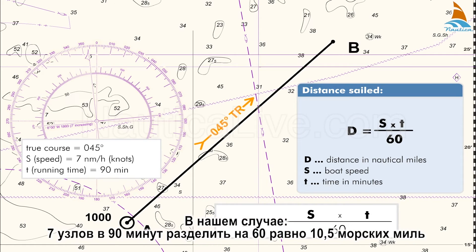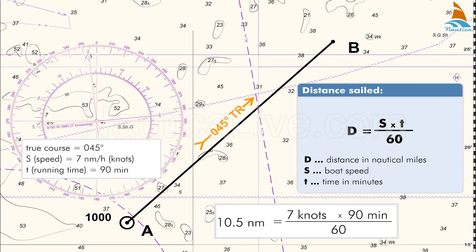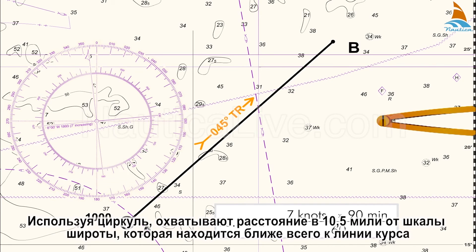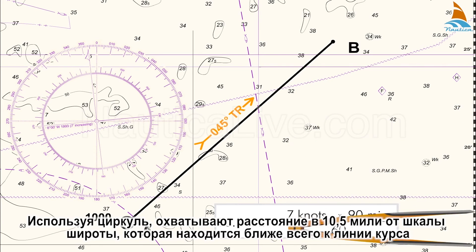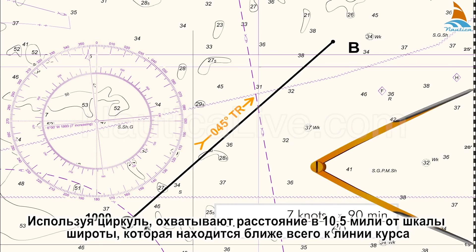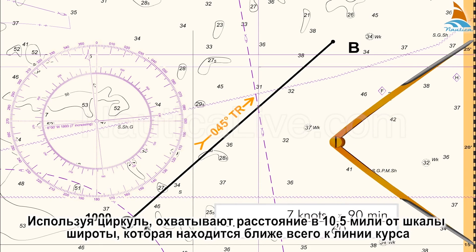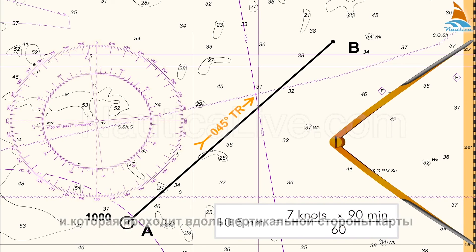In our case, 7 knots times 90 minutes divided by 60 equals 10.5 nautical miles. Using the dividers, we span a distance of 10.5 miles on the latitude scale which is closest to the course line and which runs along the sides of the chart.